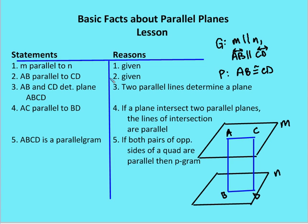Now I can say that AC is parallel to BD, because if a plane intersects two parallel planes, the lines of intersection are also going to be parallel. We talked about that in the properties of parallel planes. And finally, I can say that ABCD is a parallelogram — this comes from chapter 5 — because if both pairs of opposite sides of a quadrilateral are parallel, then by definition I have a parallelogram.